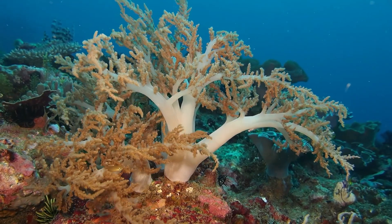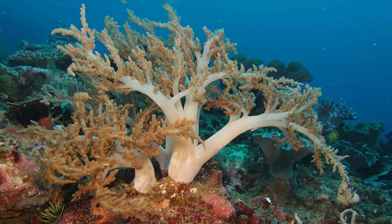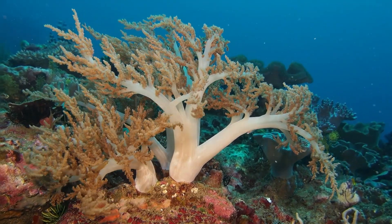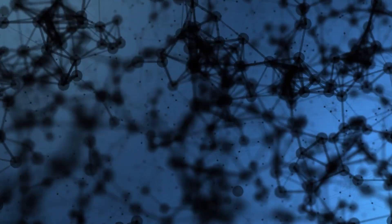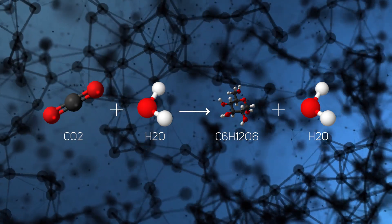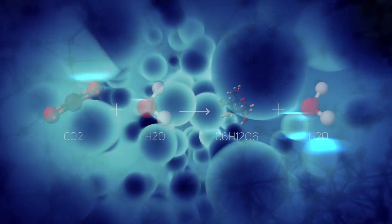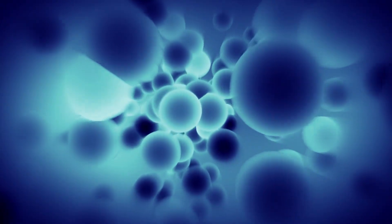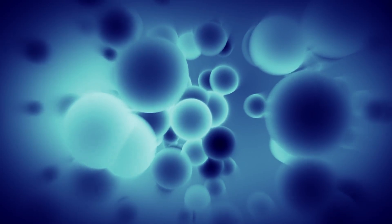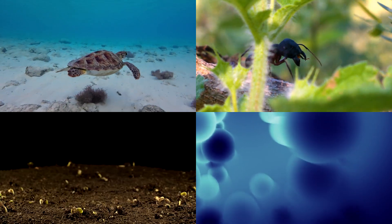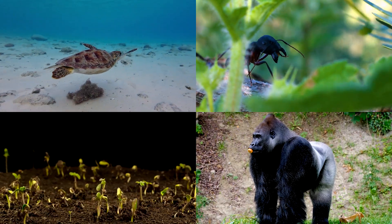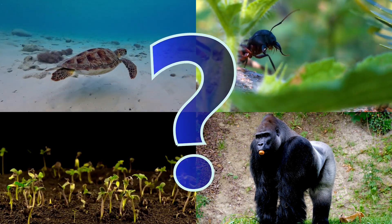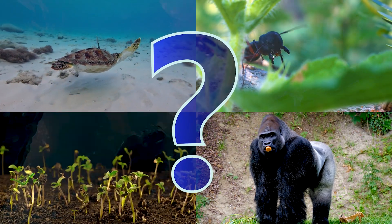Life on Earth is incredibly diverse, yet despite that, has a surprisingly uniform chemistry, mostly relying on carbon-based reactions in a water-rich environment. This gives the impression life is chemically quite simple, and we're used to thinking of life as carbon-based and water-dependent. But what if the chemistry of life isn't as concise as just carbon and water?